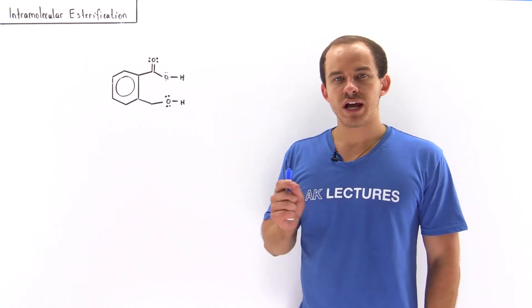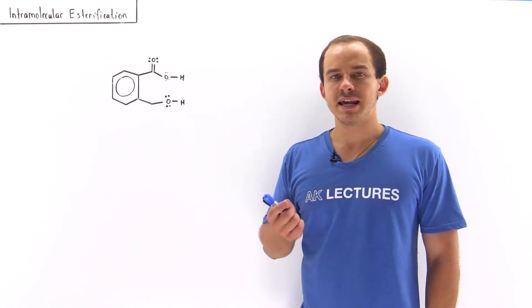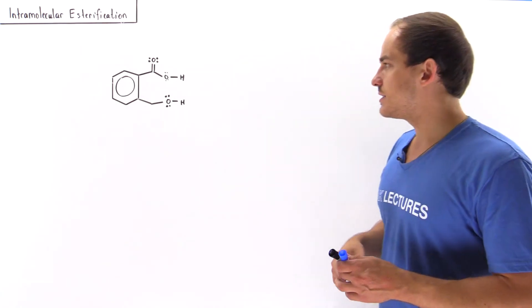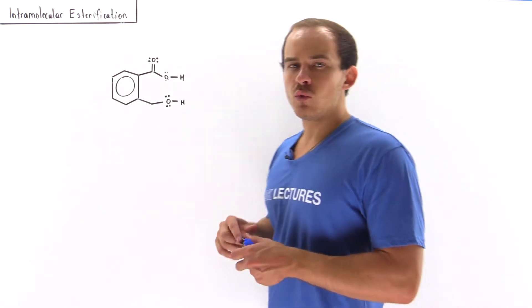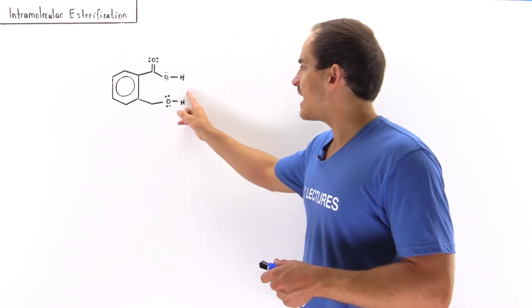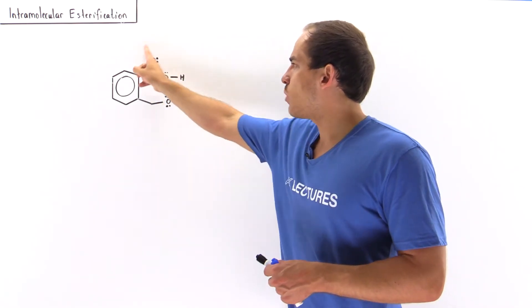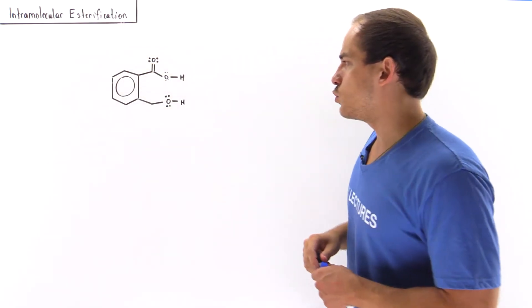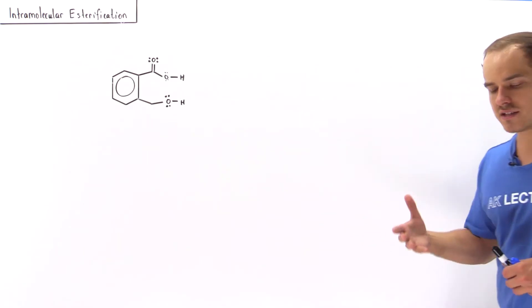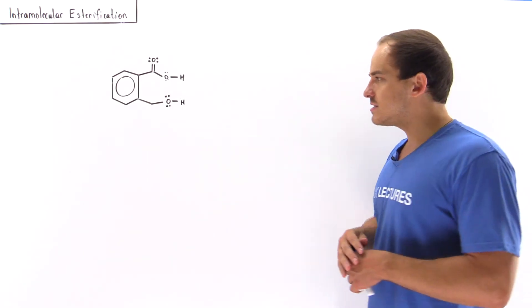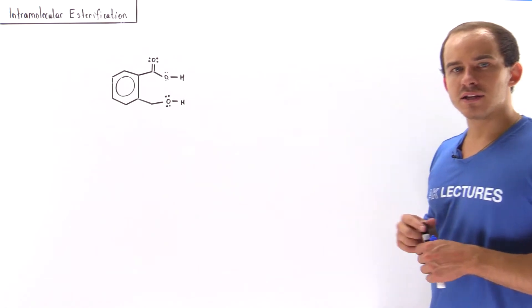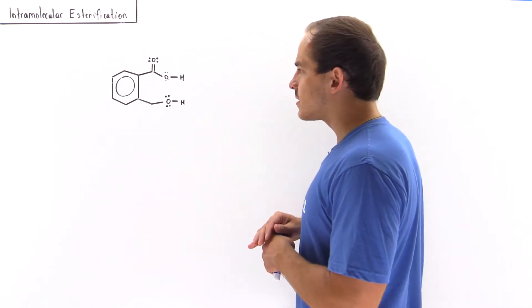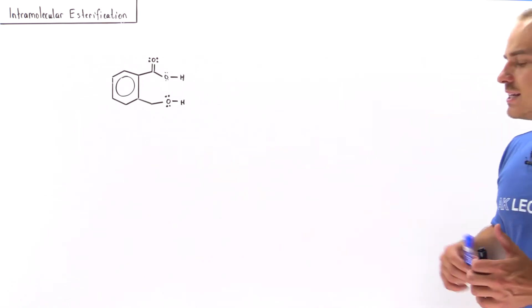The Fischer esterification reaction can also take place in an intramolecular fashion, as we'll see in this lecture. Suppose we have a molecule which has both an alcohol component and a carboxylic acid component. If we mix this molecule with an acid such as hydrochloric acid, we produce an ester molecule. The question is: what exactly is this ester product and what is the reaction mechanism?